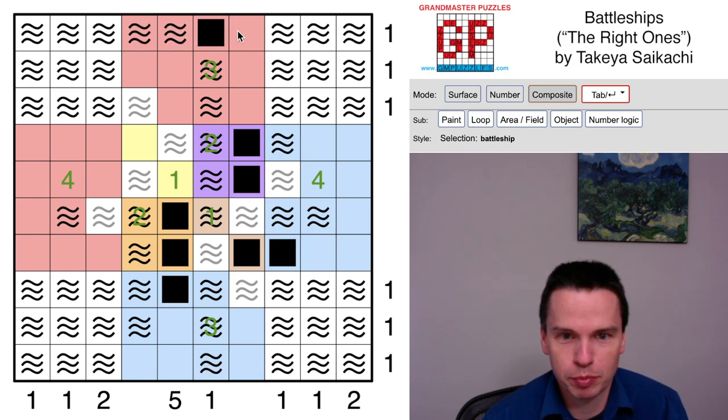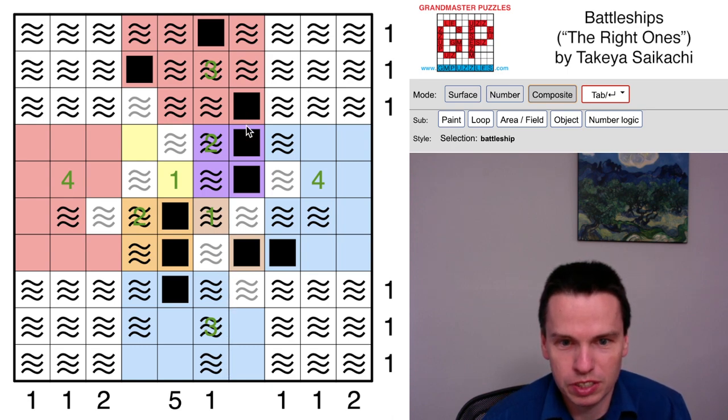That means this at the top has to be a ship. Marks that in, finishes the row, marks these off, puts in this, marks off this, puts in this. Some pretty quick eliminations and the top is all finished.